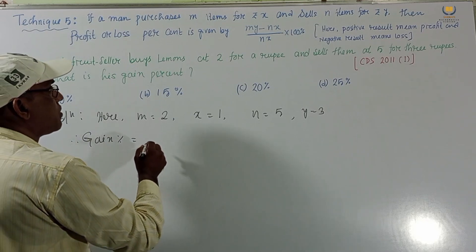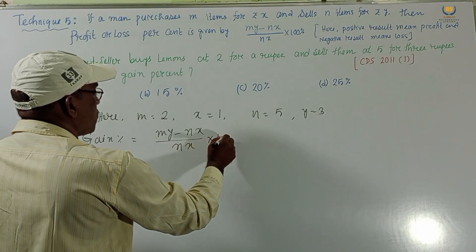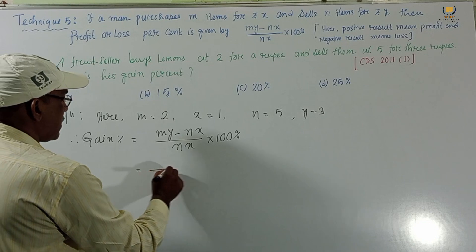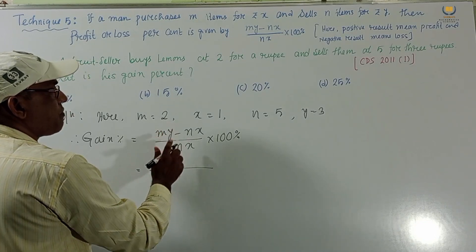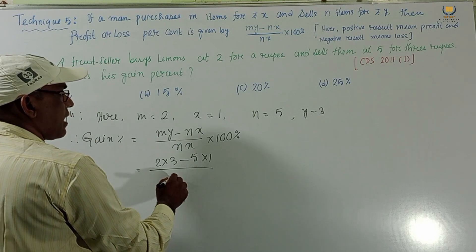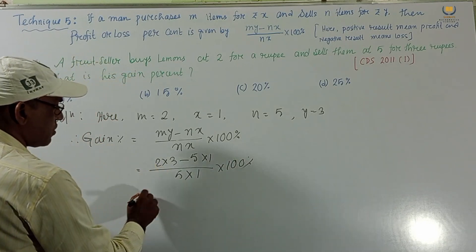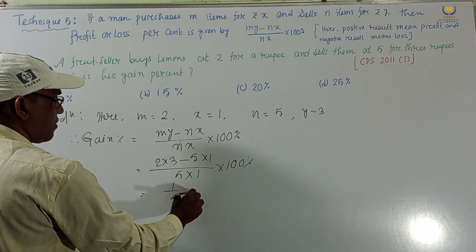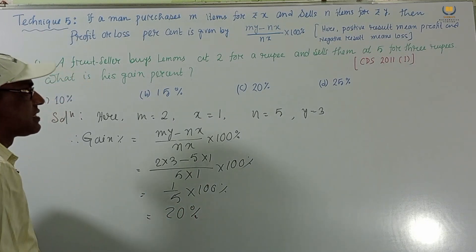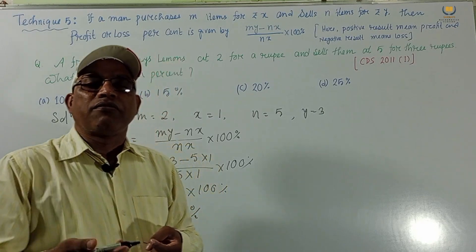Gain percent equals (my minus nx) by nx into 100 percent. Substituting: m is 2, y is 3, n is 5, x is 1. So we get (2×3 minus 5×1) by (5×1) into 100 percent, which is (6 minus 5) by 5 into 100 percent, giving 1 by 5 into 100 equals 20 percent. Answer is 20 percent, option C.